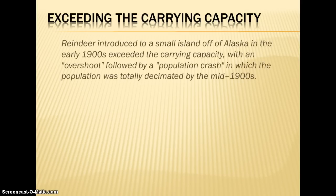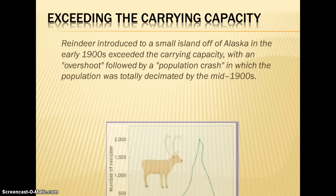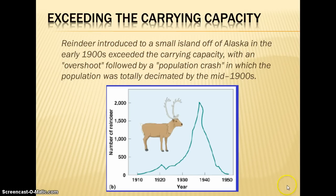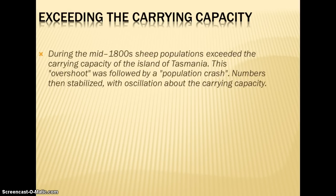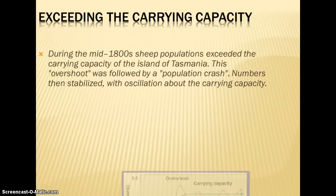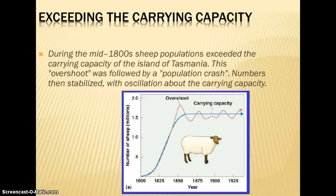If a species exceeds carrying capacity, several things can happen. For example, reindeer introduced to an island off Alaska in the early 1900s exceeded their carrying capacity. Because it was an island, once they used their resources there was nothing left, so we saw a population crash — exponential growth exceeding carrying capacity followed by a crash instead of equilibrium. In a second example, sheep populations in Tasmania in the mid-1800s also exceeded carrying capacity, but instead of complete decimation, there was a crash followed by stabilization and oscillation about the carrying capacity — the negative feedback creating stabilization.